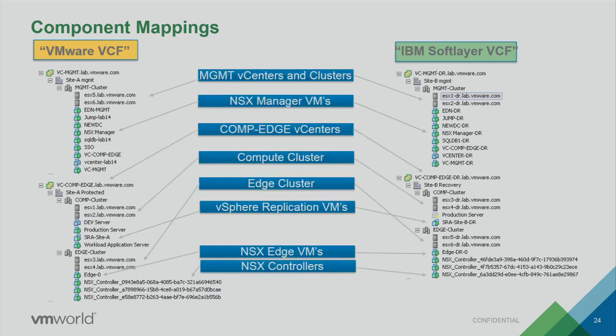What we did from an SRM perspective was mapping: management and vCenter server clusters, manager VMs, various edges we defined, the complete cluster we defined, and replication VMs that we wanted on both sides. It's a mapping from VMware VCF to IBM SoftLayer VCF. If you're familiar with VMware SRM, this is typically what you do from a networking and object DR-protection perspective.